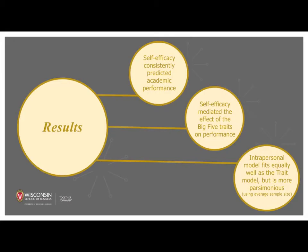Self-efficacy significantly predicted performance in all of the analyses. Of the Big Five Traits, conscientiousness and neuroticism were predictive of self-efficacy and performance only in the analyses that used the harmonic mean. The other three traits were fleeting.